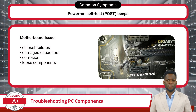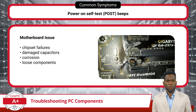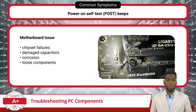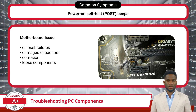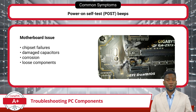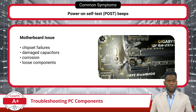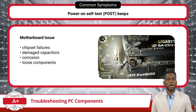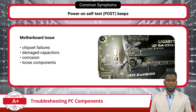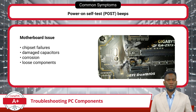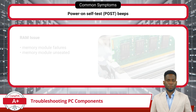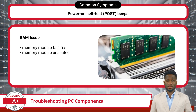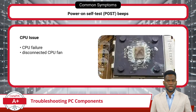If the computing device has sufficient power, it will proceed to the power-on self-test (POST). If everything checks out during the POST, a single audible beep will be heard. Otherwise, a series of beeps will be triggered, indicating a potential hardware malfunction. Each beep pattern corresponds to a specific hardware problem, with the most common culprits being motherboard malfunctions, memory failures, or CPU issues. By recognizing these POST beep codes, users can address the root cause — whether examining the motherboard for defects such as chipset failures, damaged capacitors, corrosion, or loose components; troubleshooting memory modules; or inspecting the CPU for failure or a disconnected CPU fan.